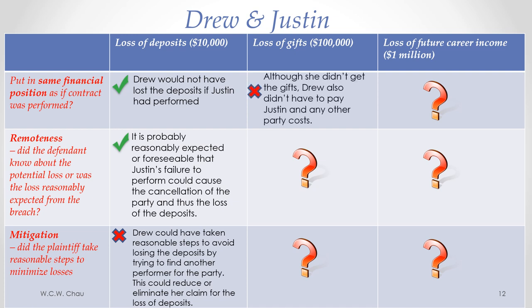Now let's look at the loss of gifts worth an estimated $100,000. Would giving her $100,000 in damages put her in the same financial position? Probably not. Although she didn't get the gifts because she canceled the party, Drew also didn't have to pay Justin or incur other costs associated with the party. Remember, expectation damages equals expected benefits minus expected costs. Even though she would have had the benefit of $100,000 worth of gifts, she would also have incurred other costs that would more than offset that $100,000. Since the first test is not passed, we do not need to look at remoteness or mitigation.